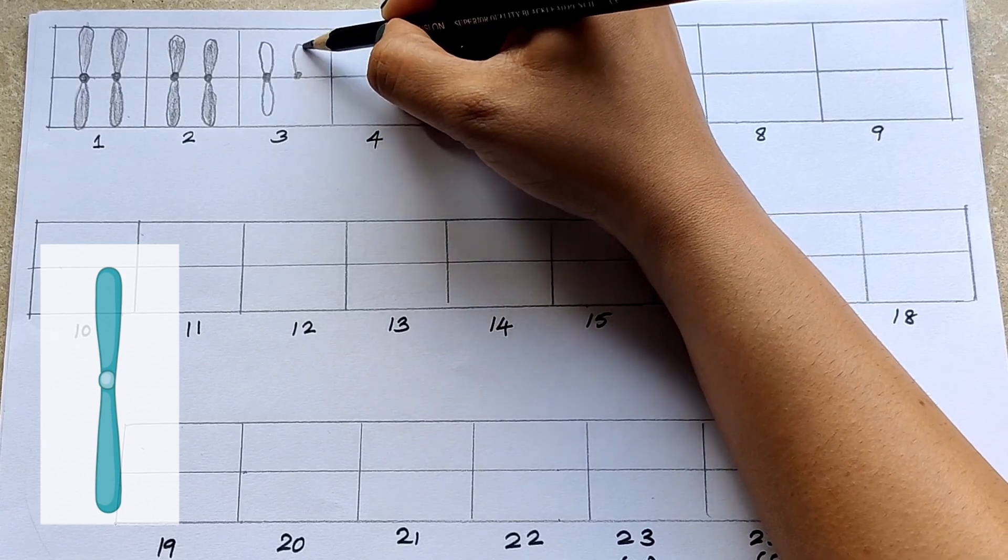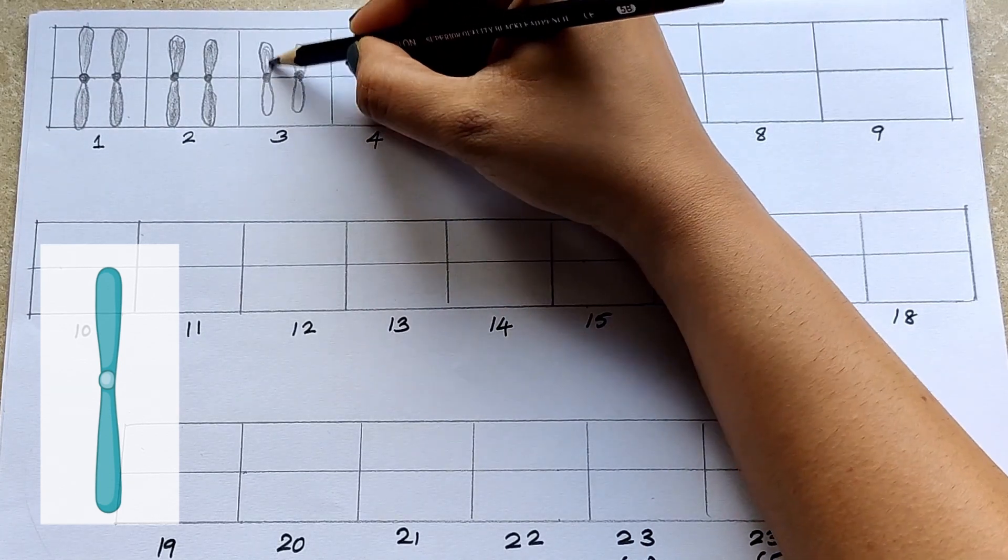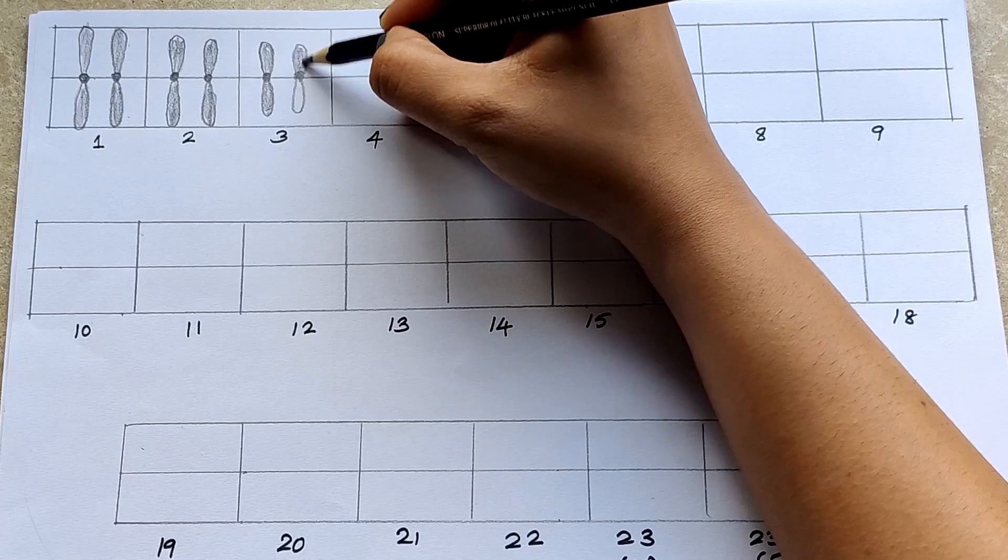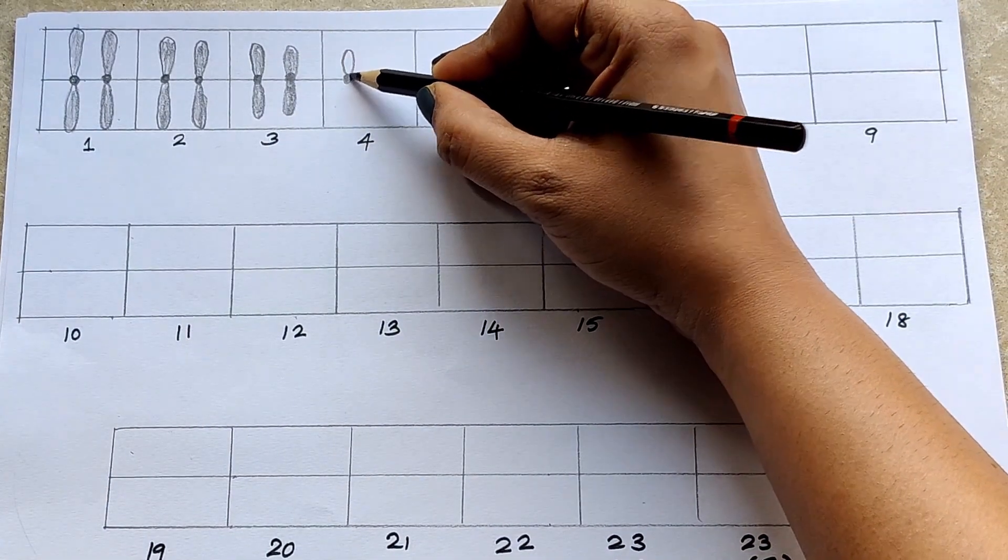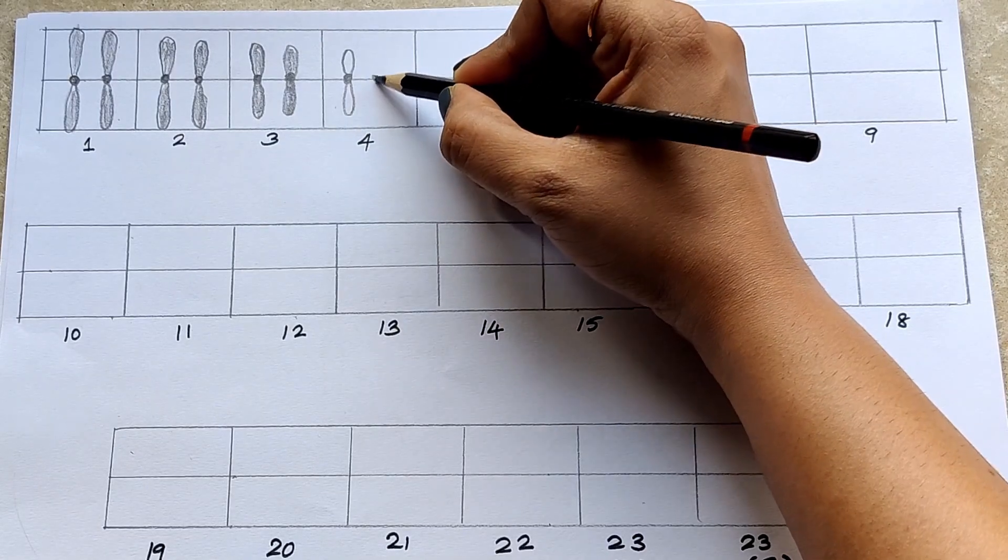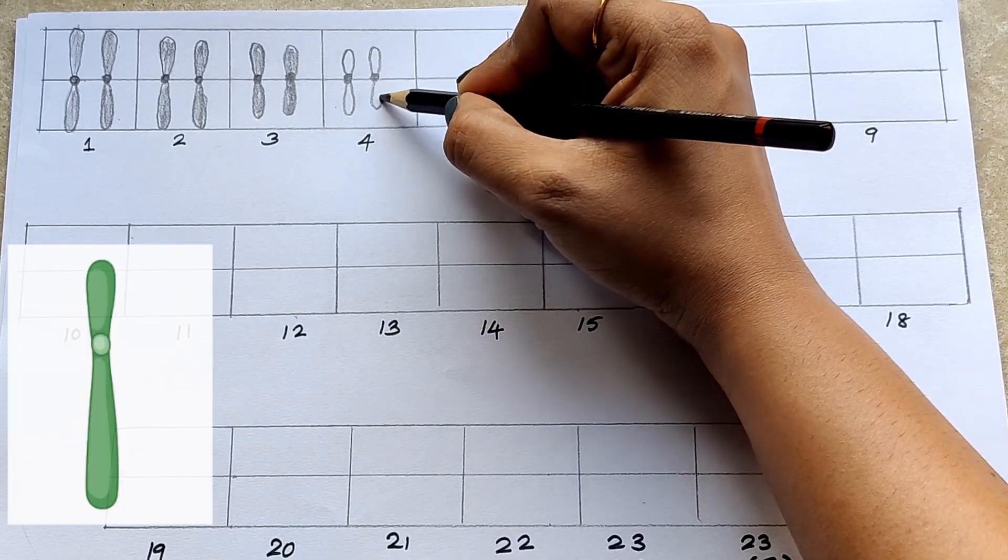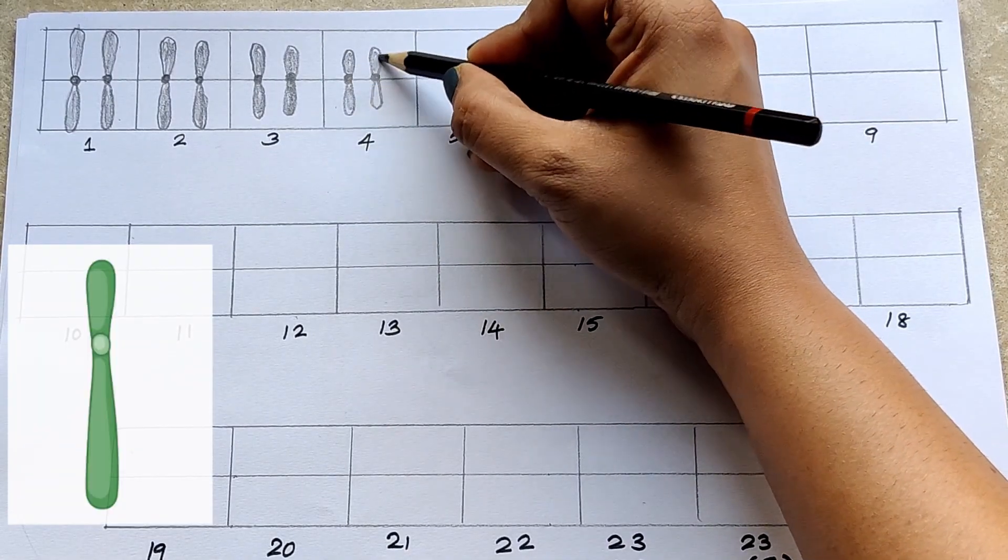The third one here is again metacentric but smaller in size than the second one. 4 to 12 are submetacentric, but fourth and fifth are larger in size.